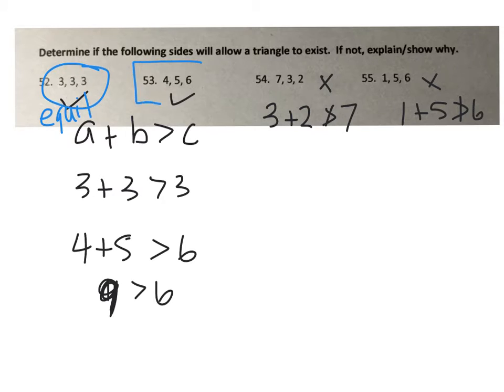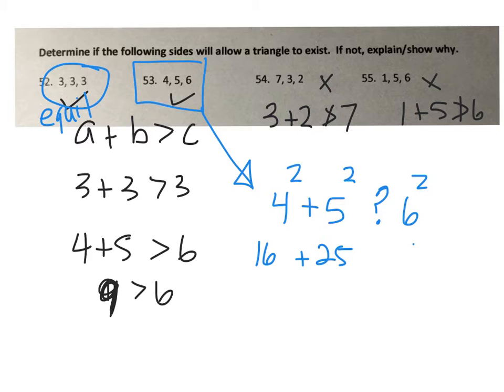What about 53? We're going to use an application of the Pythagorean theorem. We're going to test 4 squared plus 5 squared and compare that to 6 squared. That will tell us what kind of triangle it is. So 16 plus 25, how does that compare to 36?